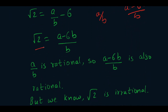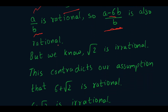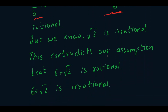Since a by b is rational and 6 is rational, a minus 6b over b is also a rational number. So root 2 equals a minus 6b over b, a rational number. But we know that root 2 is an irrational number — an irrational cannot equal a rational. So this contradicts our assumption that 6 plus root 2 is a rational number.